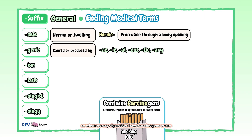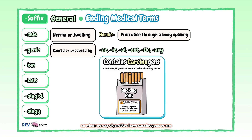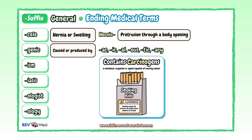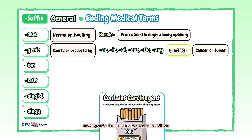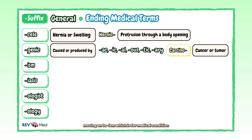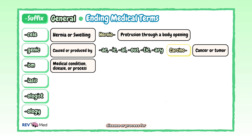So when we say cigarettes have carcinogens or are carcinogenic, it means they have the potential to cause cancer. We said in our root words lesson, "carcino" means cancer or tumor. So remember this and don't smoke cigarettes. Moving on to "-ism", which is for medical condition, disease, or process.